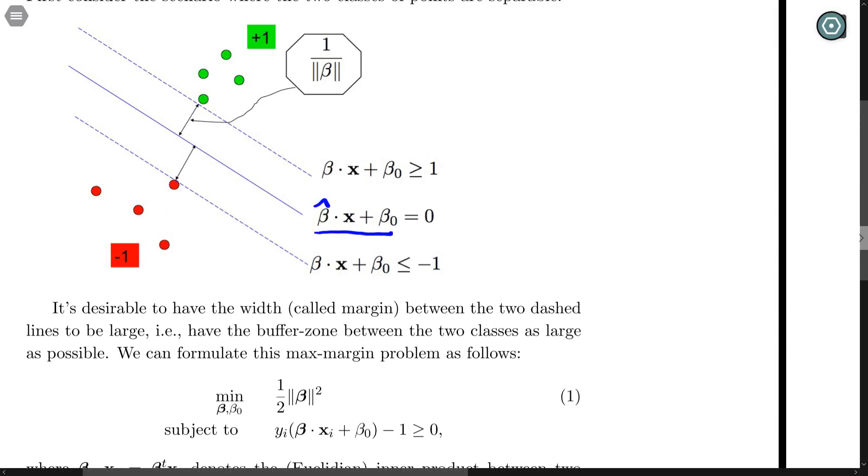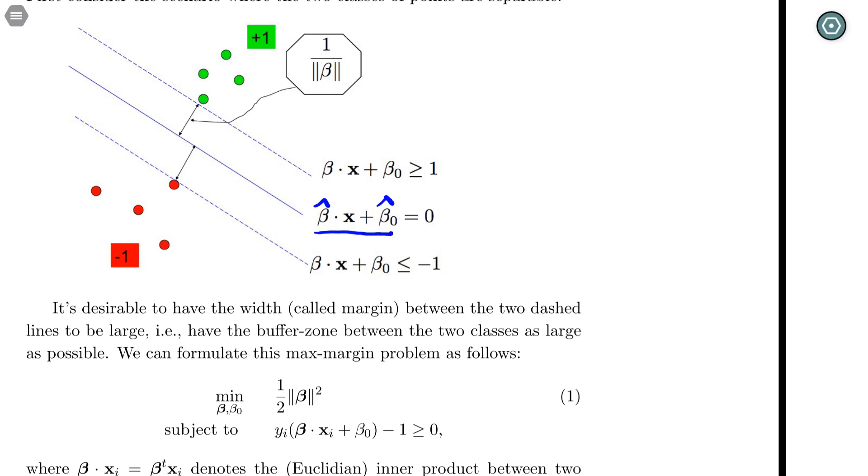The estimated beta hat and beta_0 hat, and just look at its sign. And based on sign, we're going to predict that new feature to be either plus 1 or minus 1.